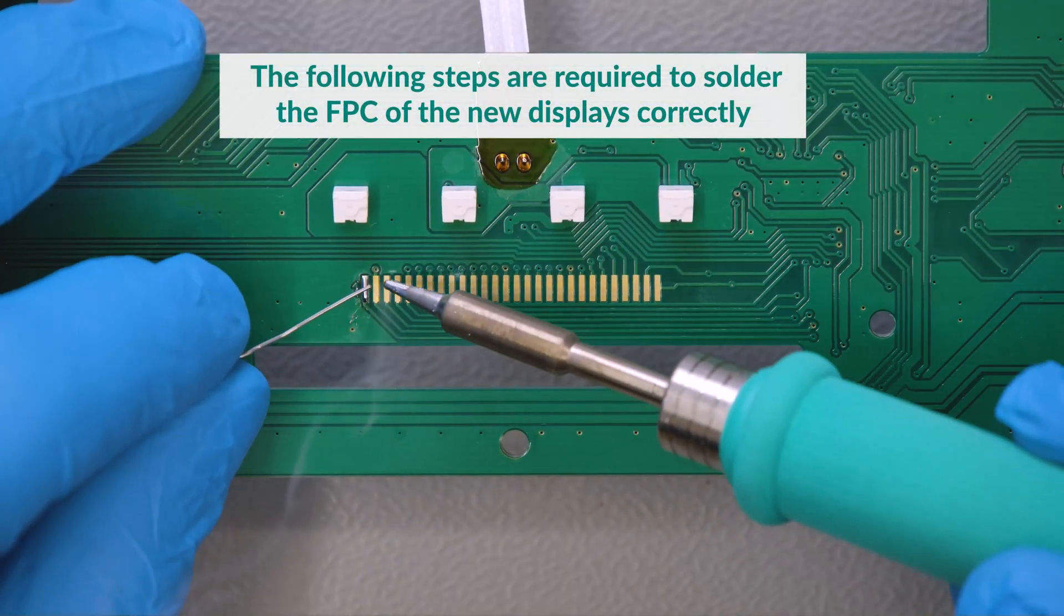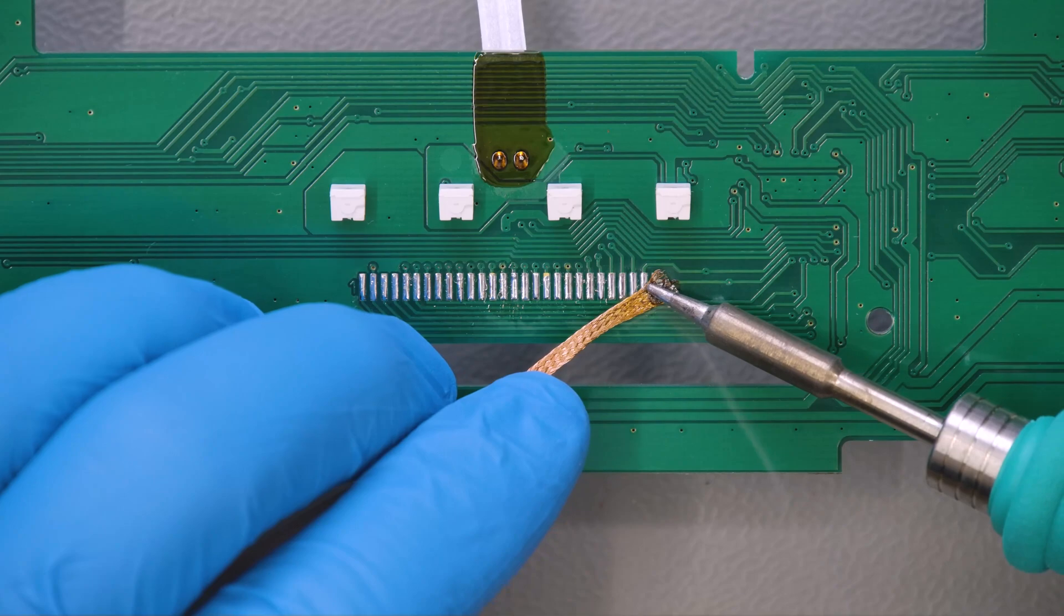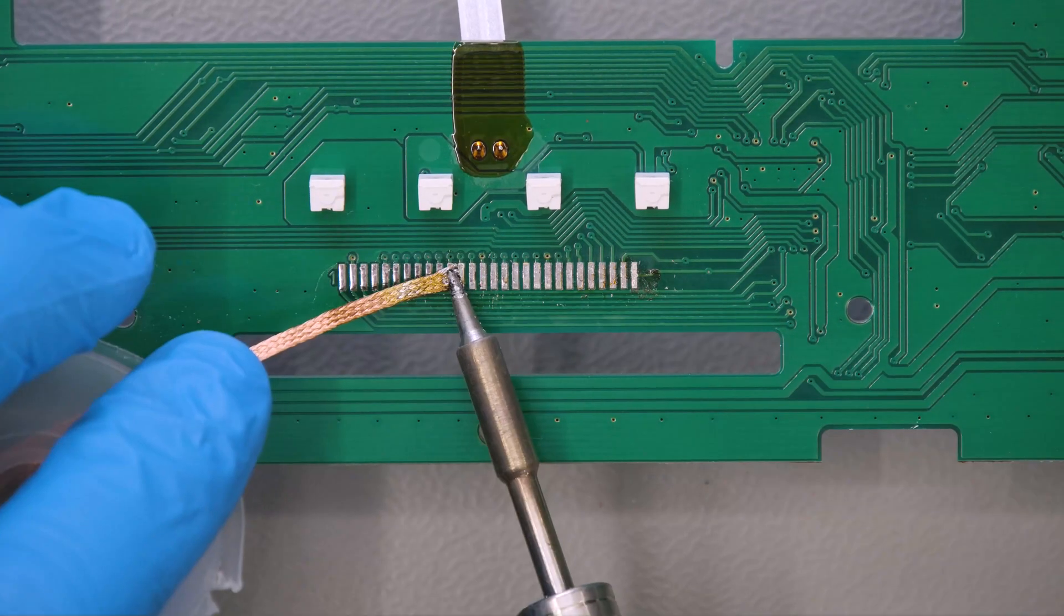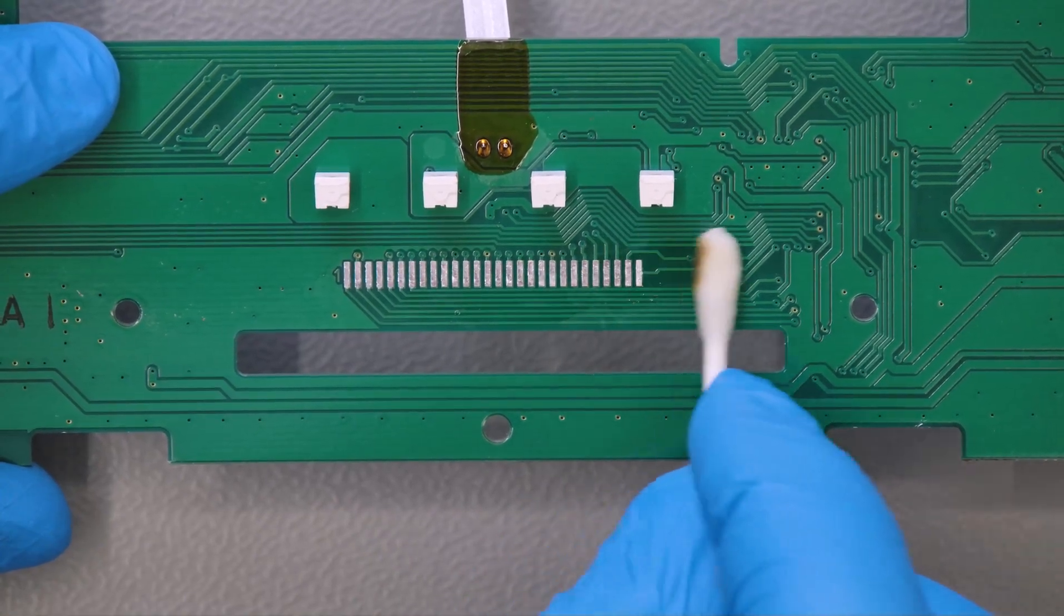Add some solder on the contacts and remove any excess with the desoldering braid. Then clean with some solvent.